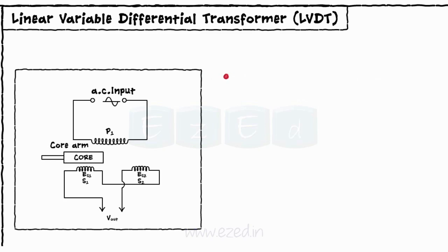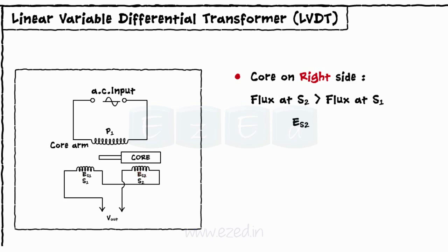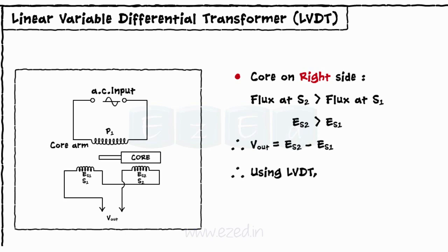Similarly, when the core shifts towards secondary winding S2 due to displacement, more magnetic flux gets linked to coil S2 than S1. Hence, the EMF induced in coil S2, ES2, is more than S1, ES1. Thus, the output becomes Vout equals ES2 minus ES1. Using LVDT, the displacement of a core is converted into an equivalent electrical signal.